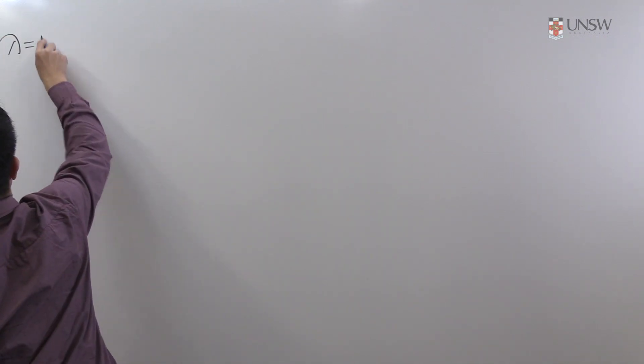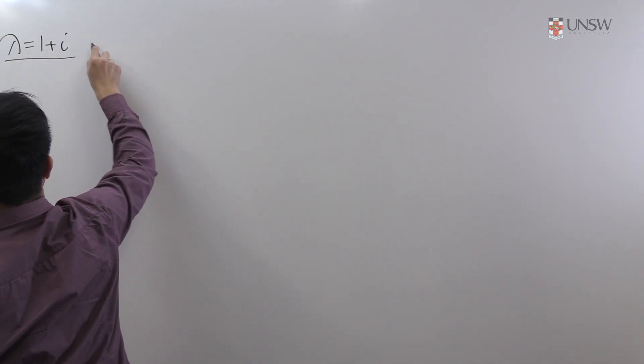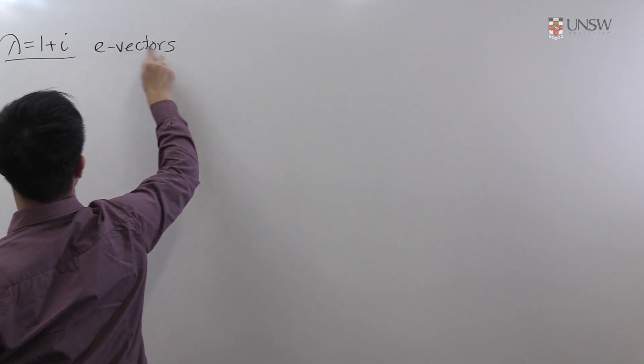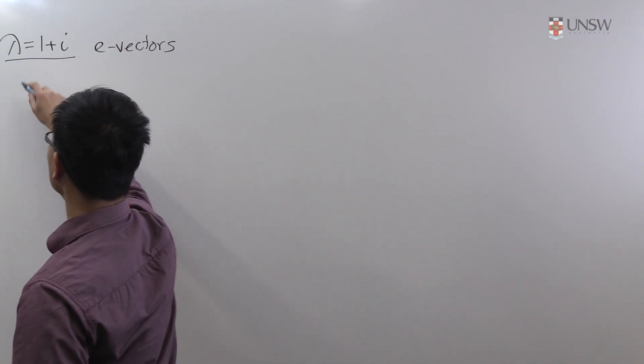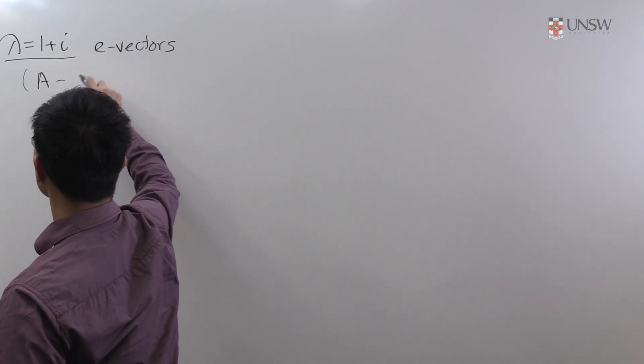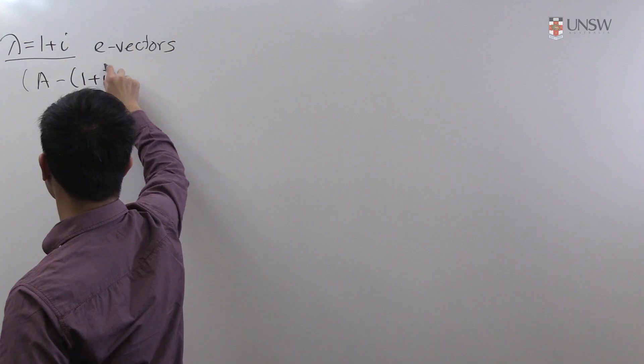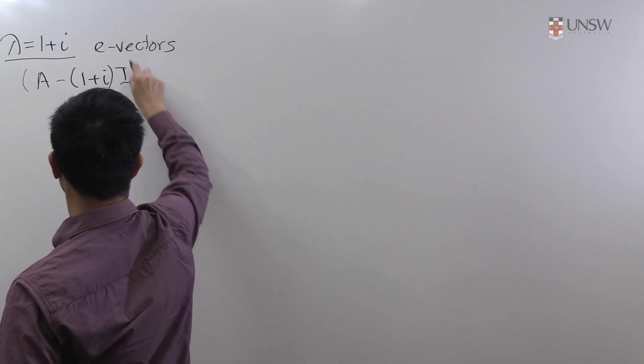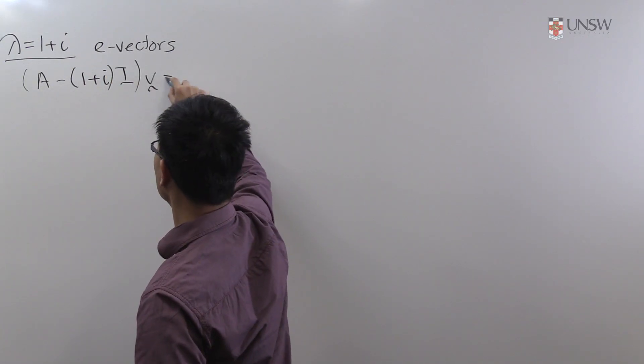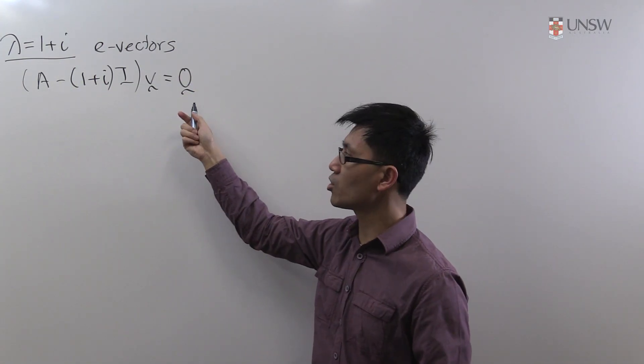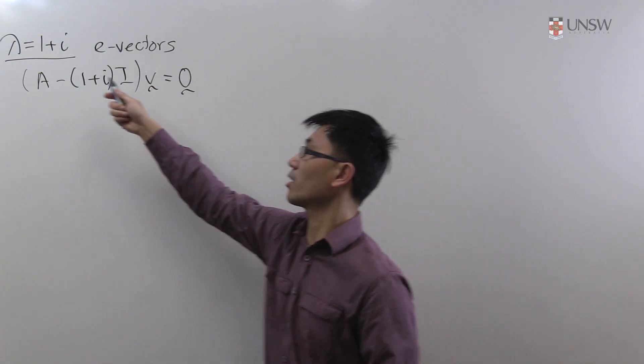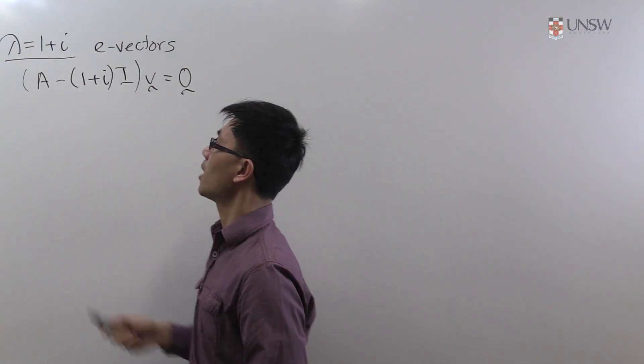So let's look at the lambda equals 1 plus i eigenvectors. And to find them you have to look at the following vector equation. A minus lambda, in this case is 1 plus i, times the identity matrix v equals 0. And the point is the non-zero solutions to this equation give you the eigenvectors with eigenvalue lambda equals 1 plus i.